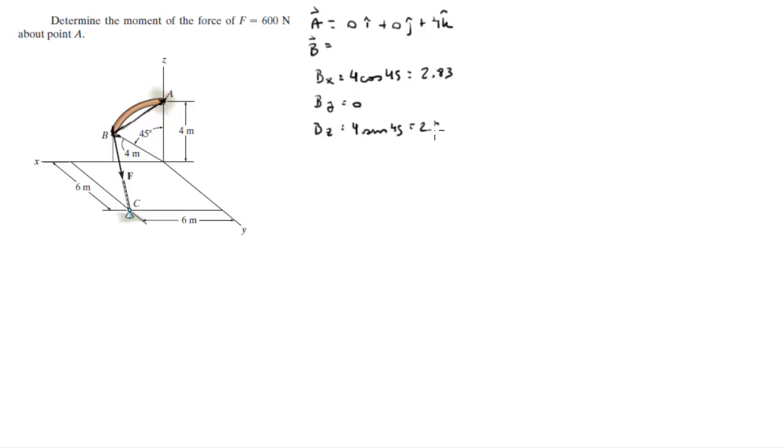So B sits at 2.83I plus 0J plus 2.83K. So vector AB is equal to vector B minus position vector A, and it comes out to be 2.83I plus 0J minus 1.17K. So this is the first vector.